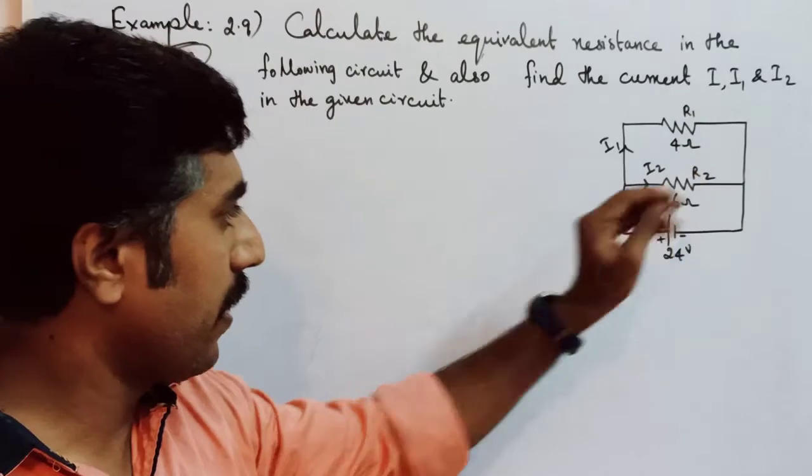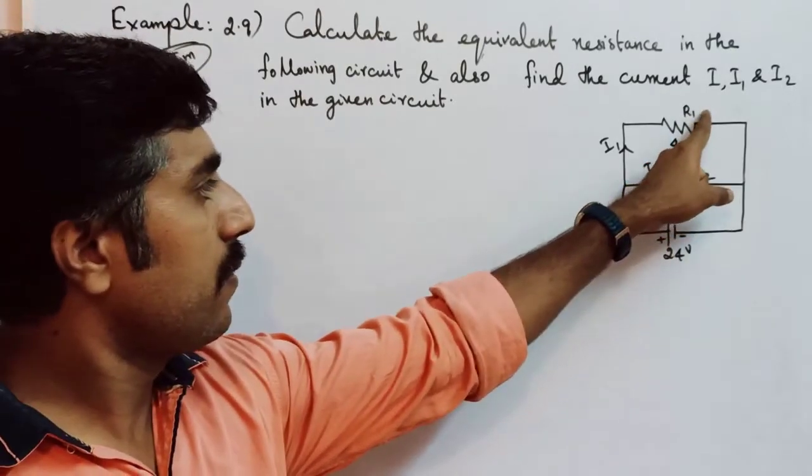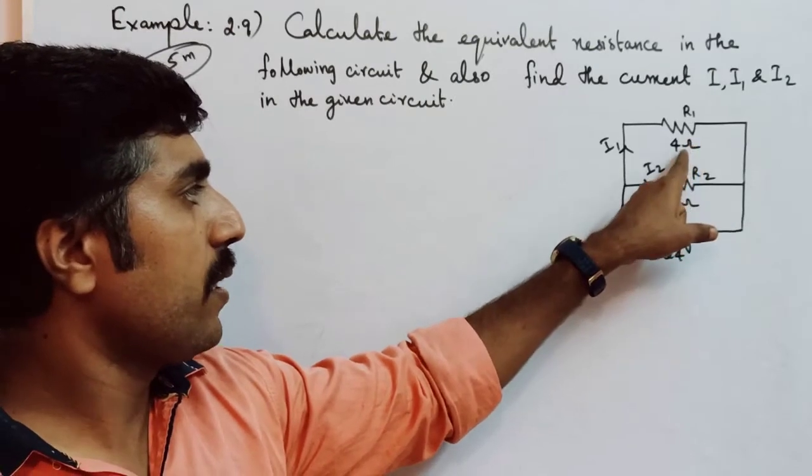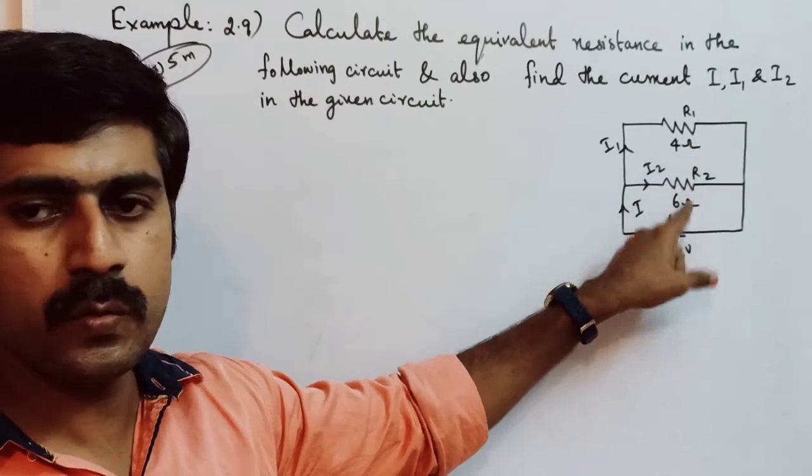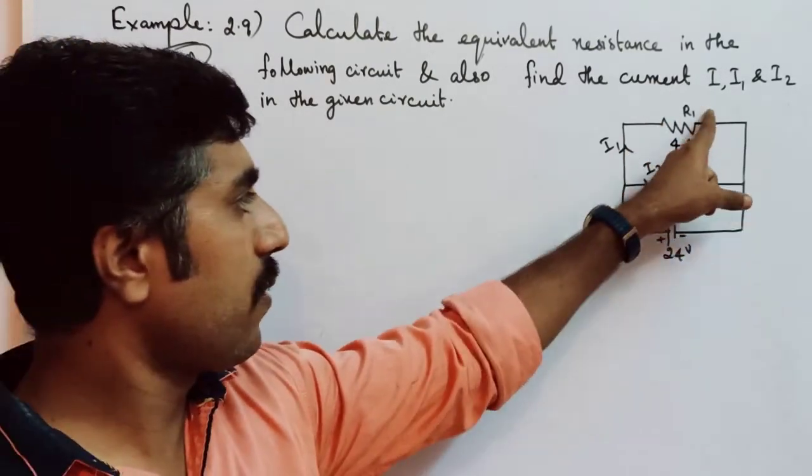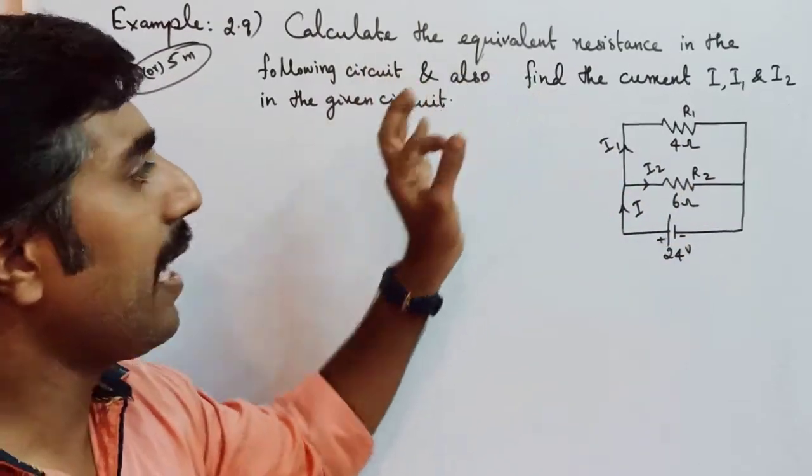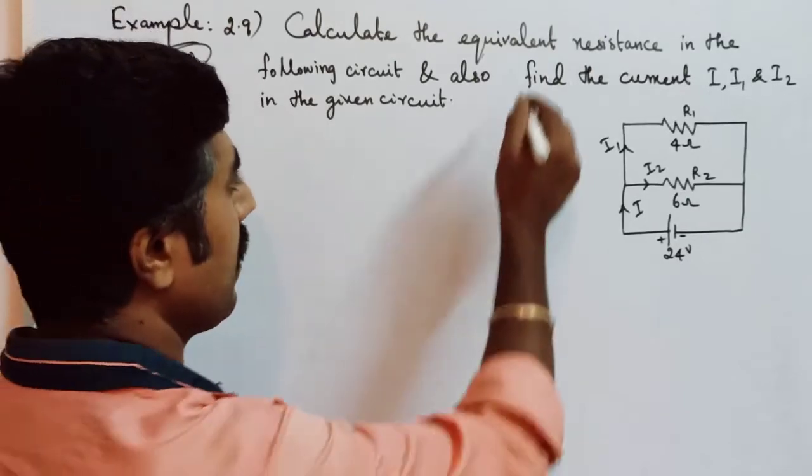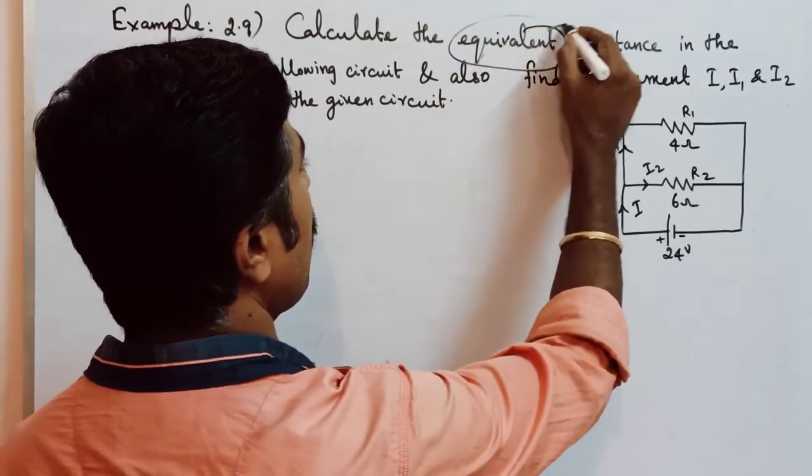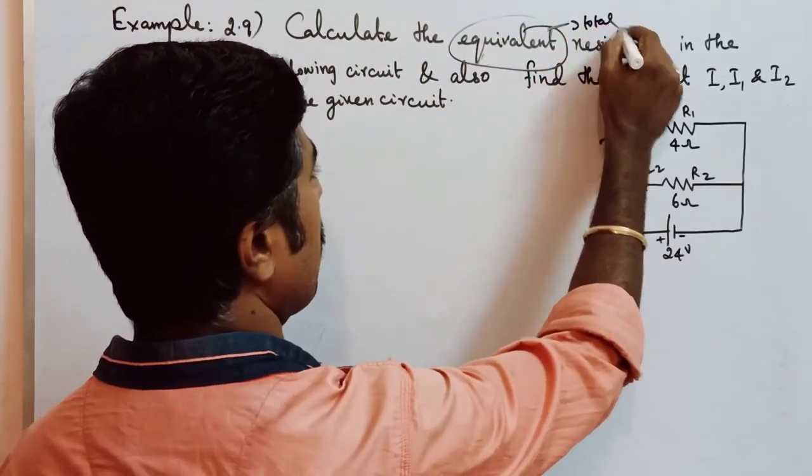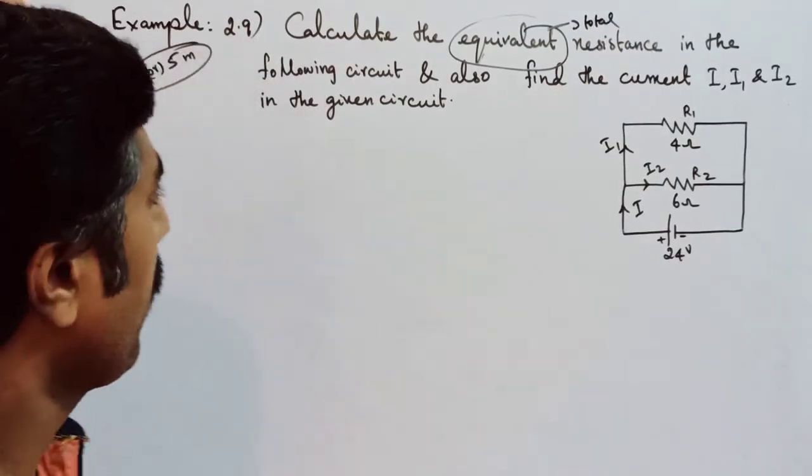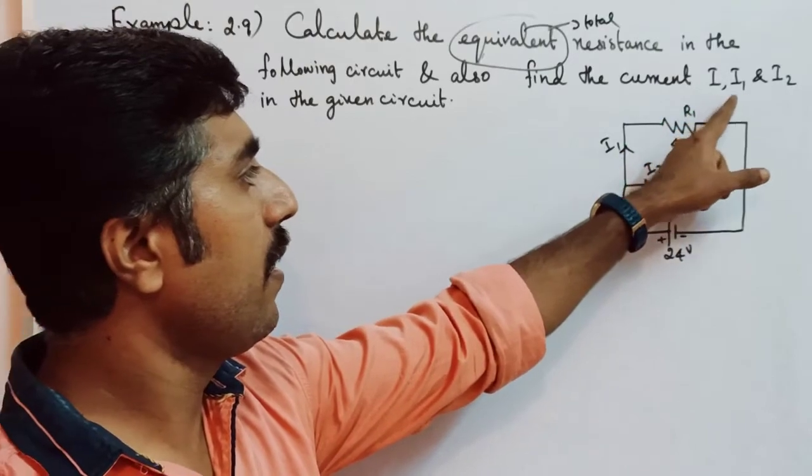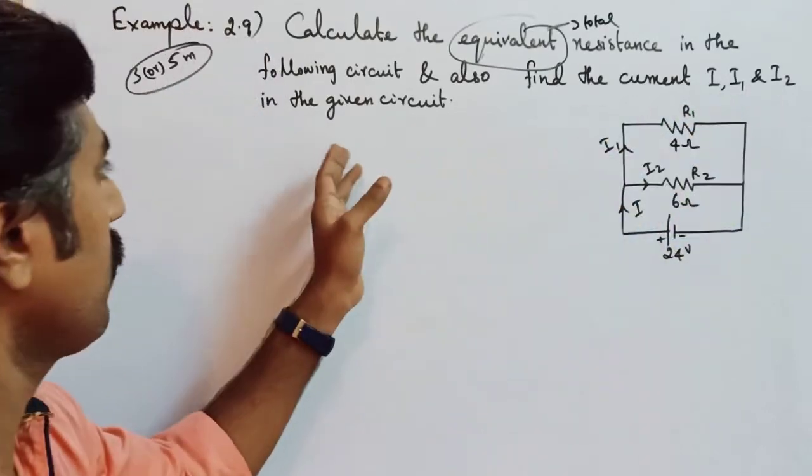See the circuit diagram. Here 2 resistors are there, right? Of resistances one is 4 Ohm and 6 Ohm. Two resistors, one is R1 and R2. The question is calculate the equivalent resistance. Equivalent resistance is nothing but total resistance. And also find the current I, I1, I2 in the given circuit.